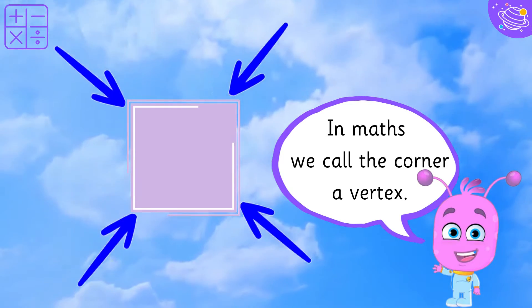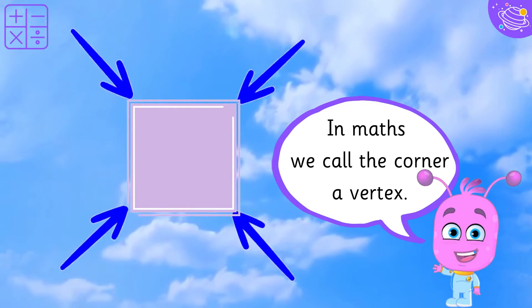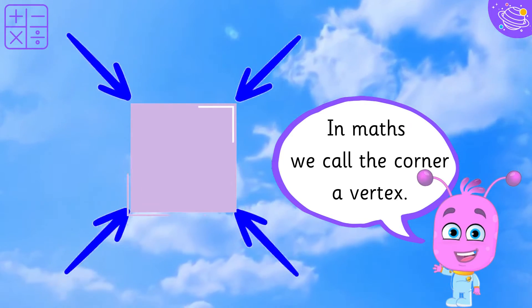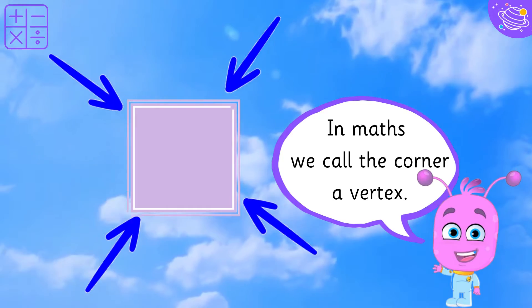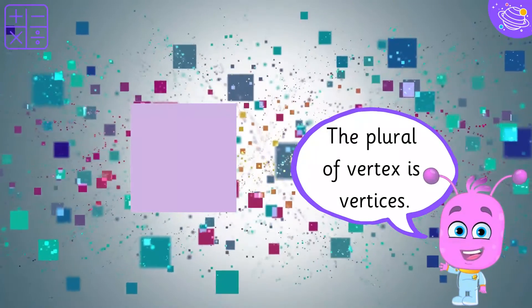In maths, we call the corner a vertex. The plural of vertex is vertices.